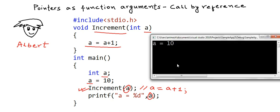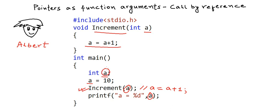But when he runs the program, the output of the print statement is a = 10. Albert does not understand why this is happening. He has declared a variable a, initialized it to 10, passed it to the function increment, and the same a is being incremented by one in that function. So why is the printed value 10 and not 11?